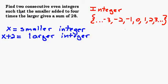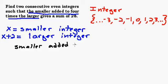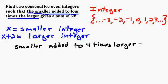Now we've got our variables to find and we can look and see what this says. We know that the smaller added to four times the larger gives us a sum of 28. Let's write this out: the smaller added to four times the larger is 28. Now we just substitute in with our variables. We know that's X.